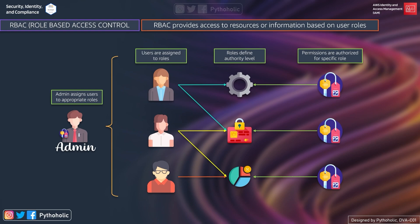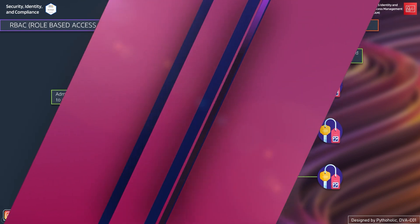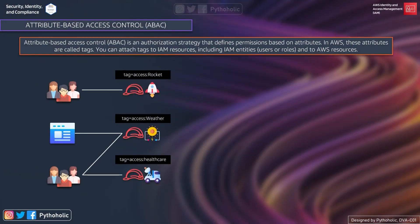This raises the question: can we use attributes to control access via IAM? If you want attribute-based access control, let's understand that. ABAC is an authorization strategy that defines permissions based on attributes. In AWS, these attributes are called tags.